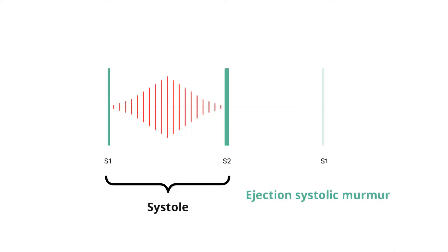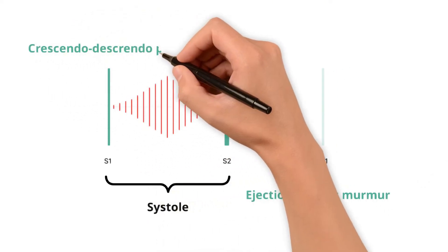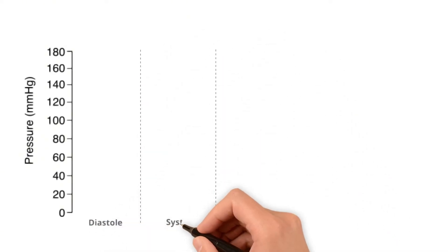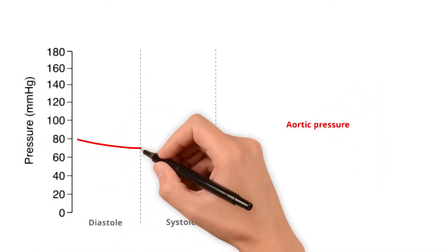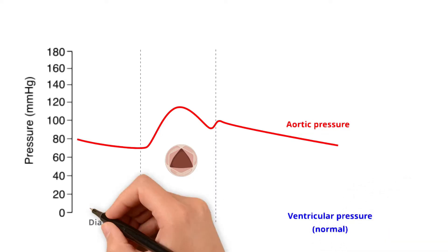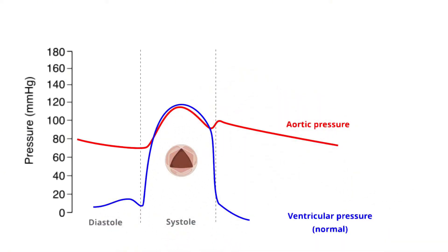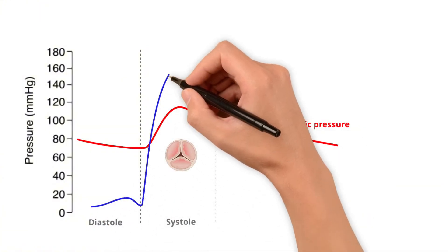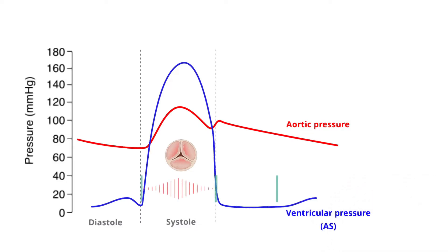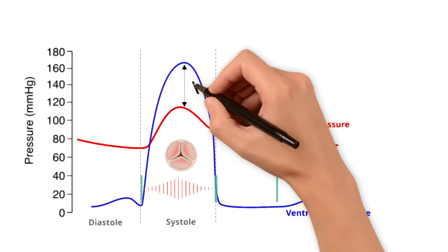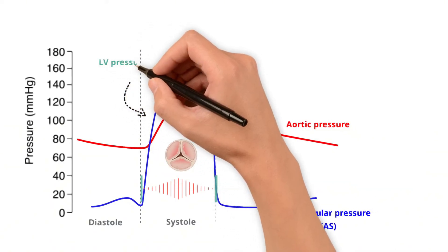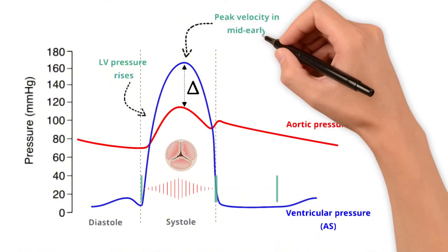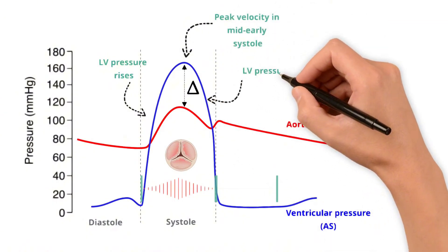Aortic stenosis produces an ejection systolic murmur with a crescendo-decrescendo whooshing pattern. This pattern is explained by changes in pressure in the LV and aorta. The speed of ejected blood, and hence loudness of the murmur, is determined by the difference in pressure between the LV and aorta. In aortic stenosis, the restriction to flow means that in systole the pressure in the LV exceeds that in the aorta, creating a pressure gradient. This gradient rises until mid-systole — where the murmur is loudest — before falling back towards zero when the aortic valve closes.